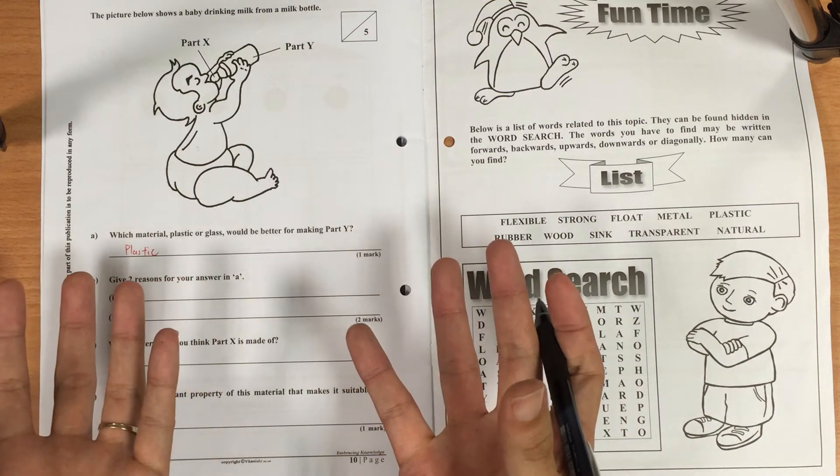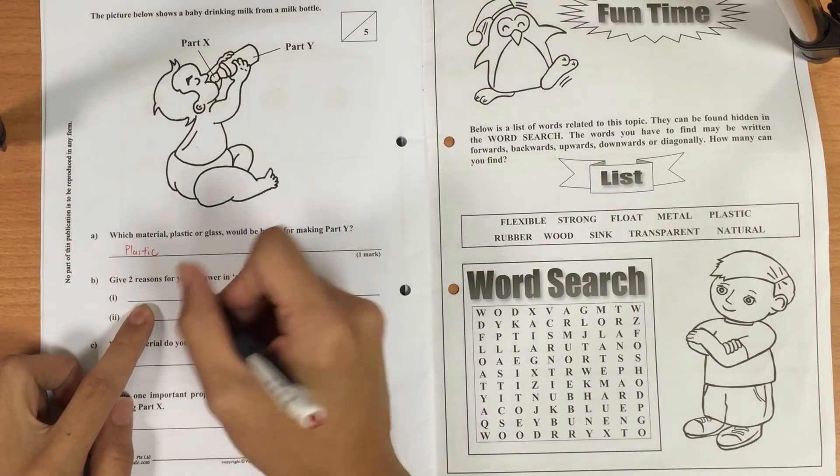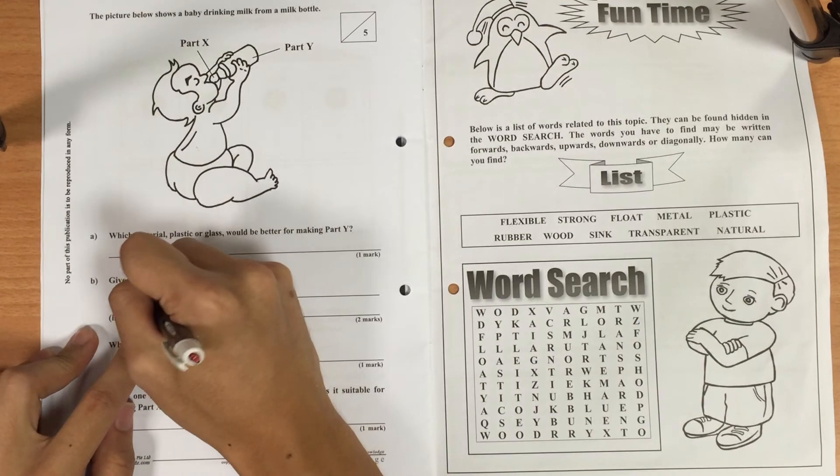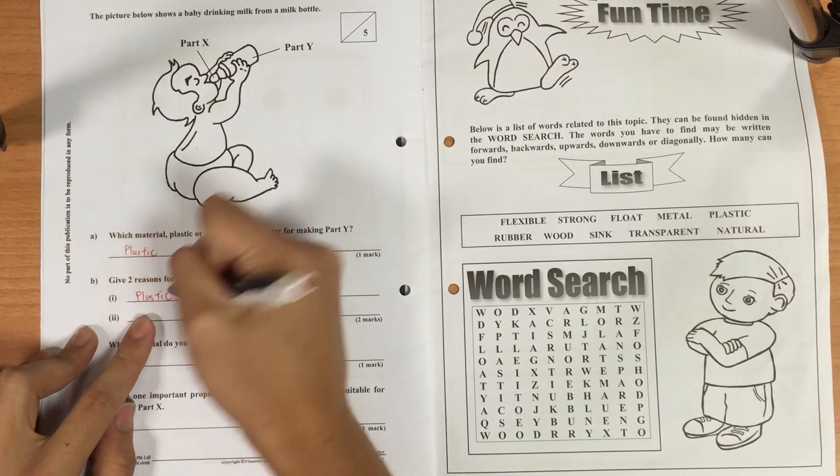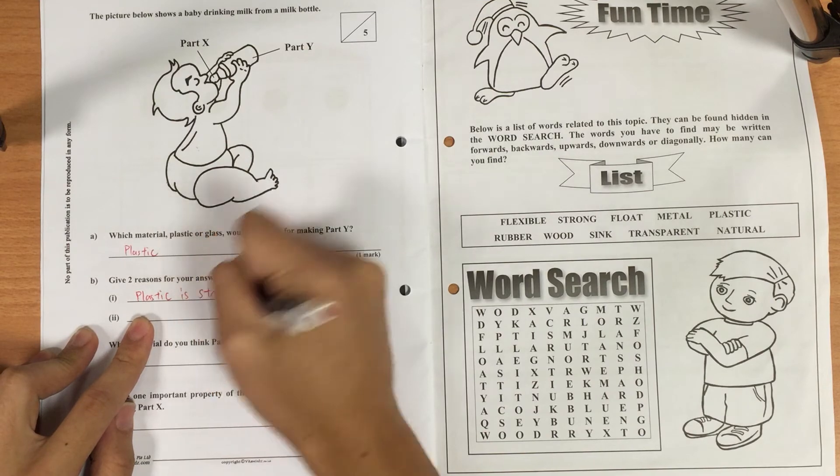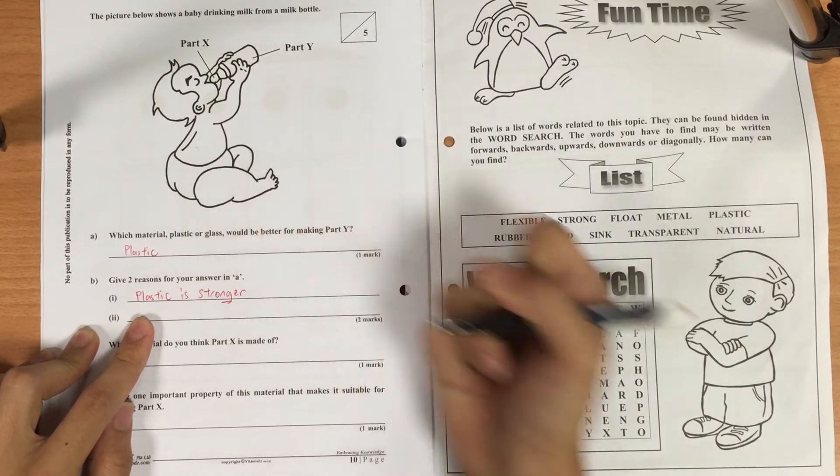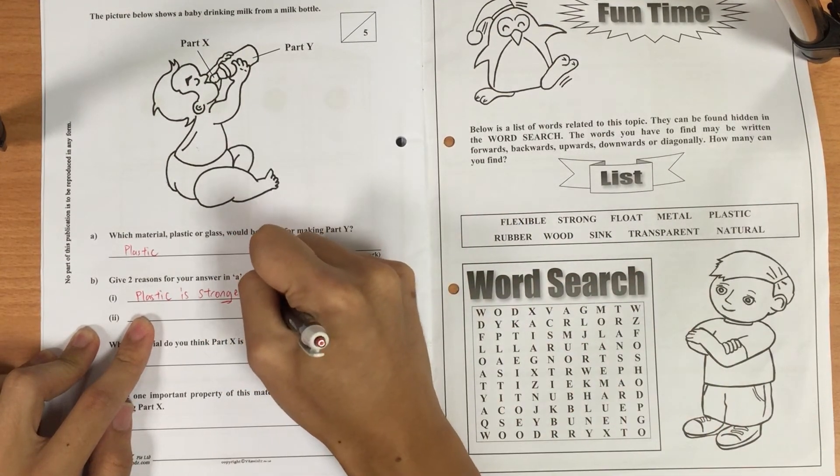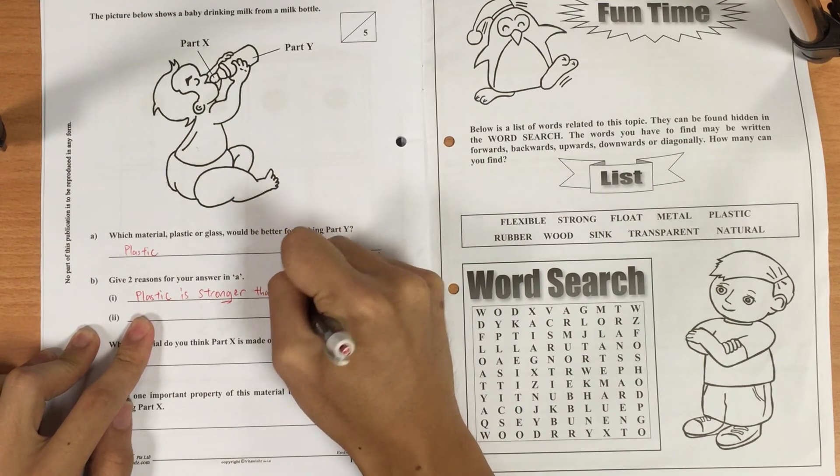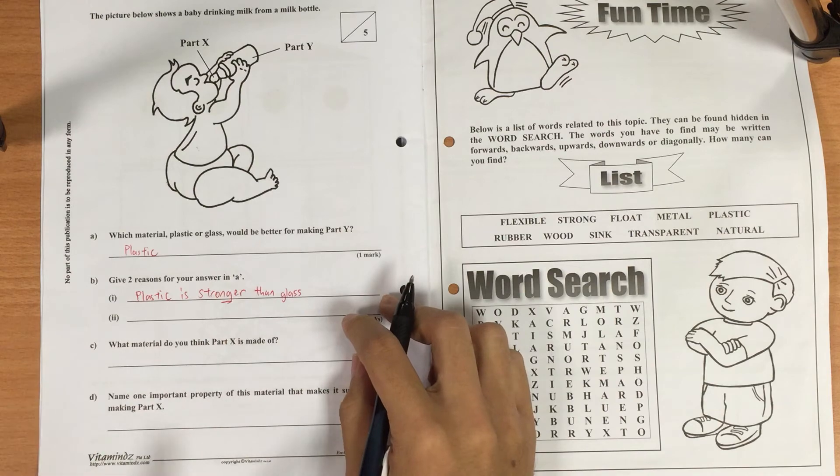Plastic is definitely - if you drop it on the floor, would it break easily? No, compared to glass. So I would say that plastic, in this case, if it doesn't break easily - plastic is strong. Is that good enough? Do you find a mistake? Yes, stronger. It's stronger than glass. And if you add on, and so it does not break easily, that's okay as well.